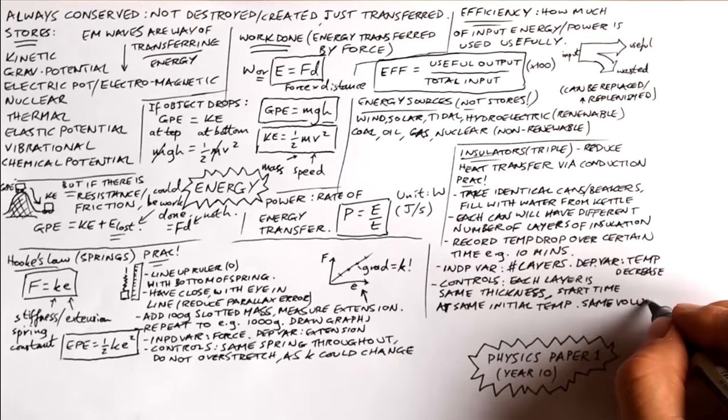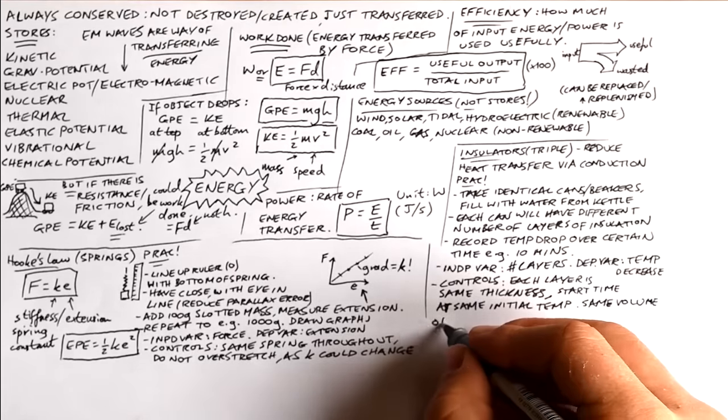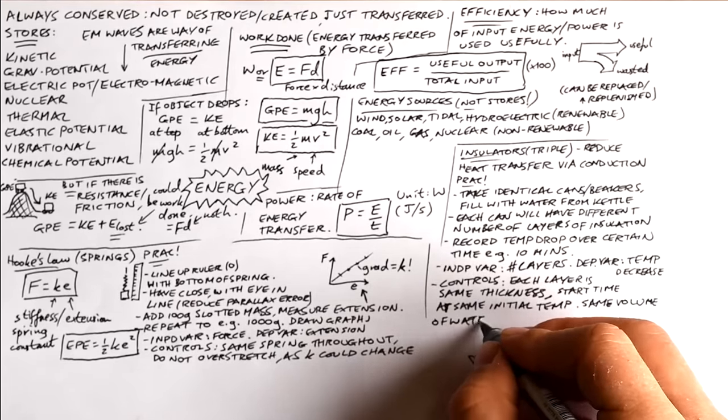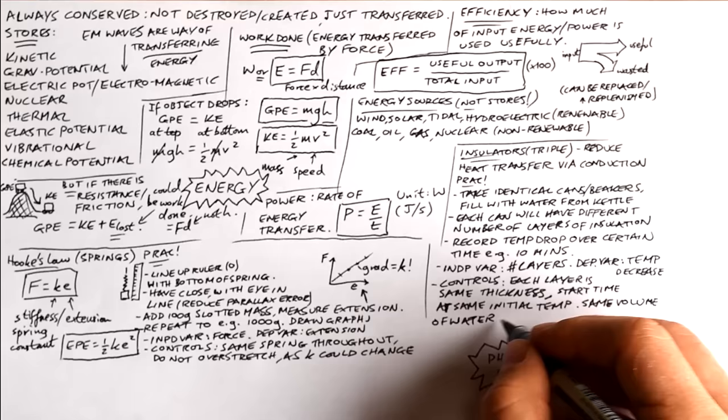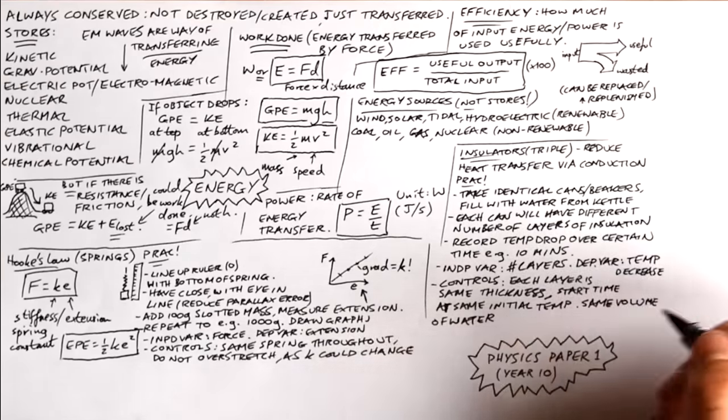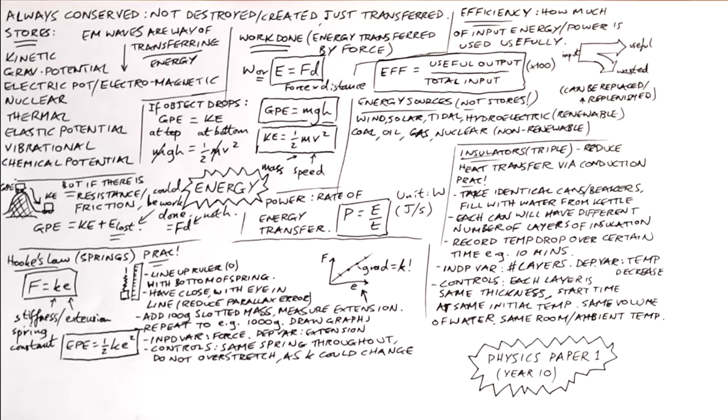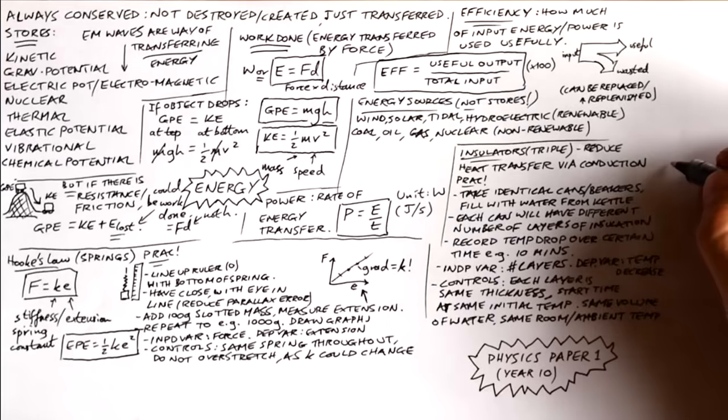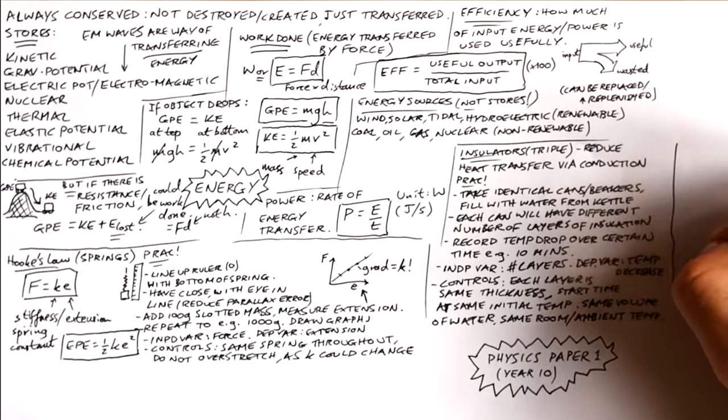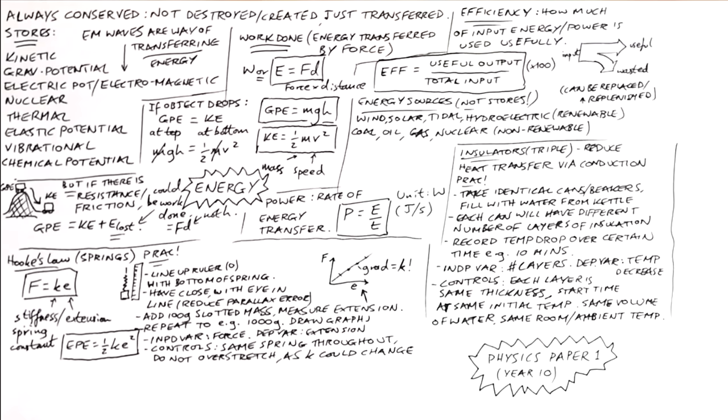Controls, quite a few here. Make sure that each layer has the same thickness. Make sure the time is started at the same initial temperature. So say wait until the temperature drops to 80 degrees, then start your stop clock. We're measuring the temperature with a thermometer. Same volume of water. We can measure that with a measuring cylinder. And we can make sure we have the same room, same ambient temperature, so we don't have heat being lost at different rates. And of course it's a good idea to put a lid on the beaker or cans to reduce heat loss due to convection.